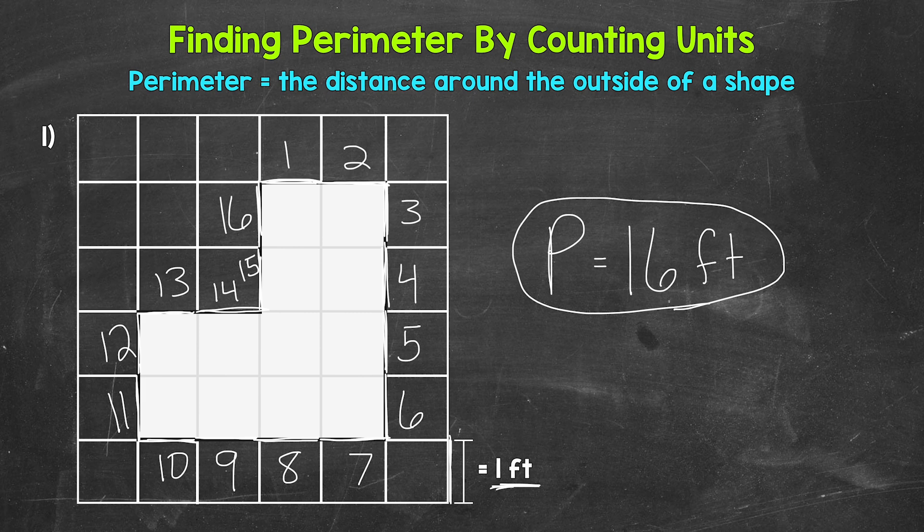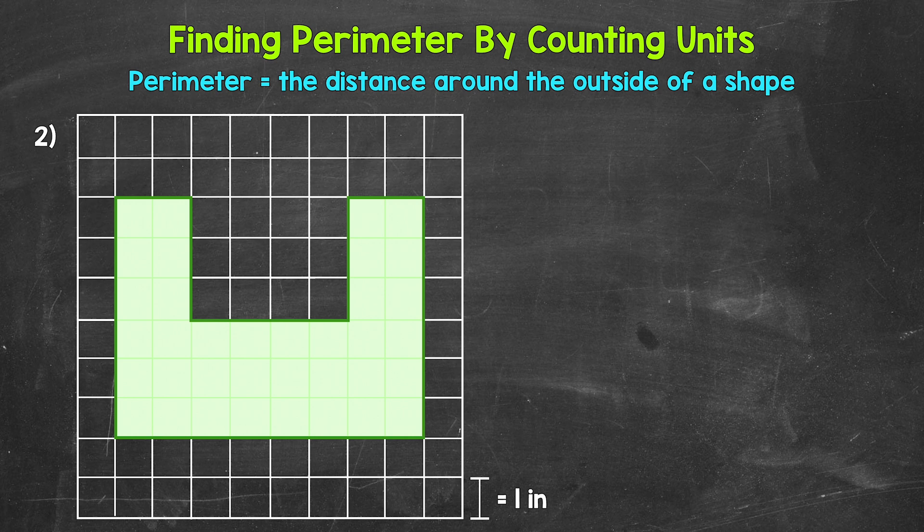Let's try another example and move on to number two. Taking a look at number two, let's find the perimeter of this composite figure. Now our unit here is inches. So each side of a square is one inch. For example, this side of the square down there is one inch. So let's find the perimeter here.